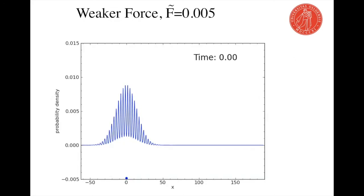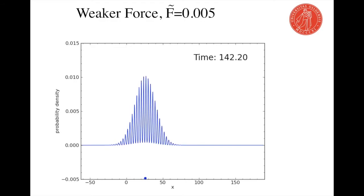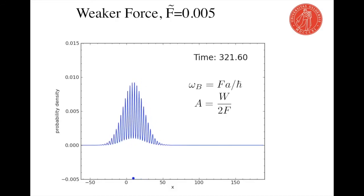Then we can look at the weaker force. Here the force is one-half of the original one. Then we get an oscillation with a low frequency but a large amplitude. In fact, the Bloch oscillation frequency is proportional to the product of the force and the lattice spacing while the amplitude is proportional to the ratio of the bandwidth over the force.